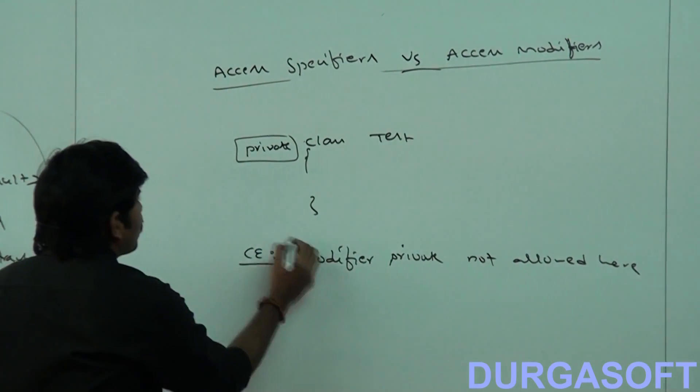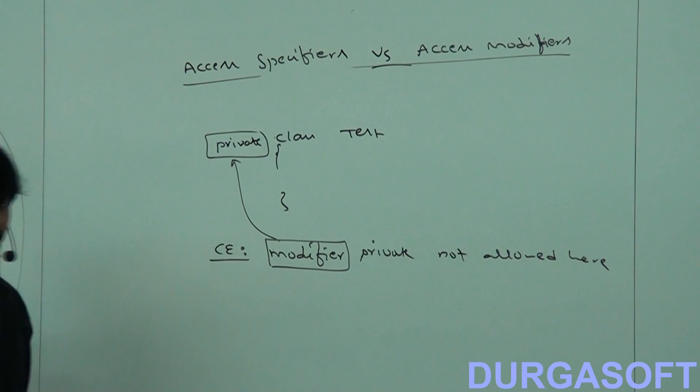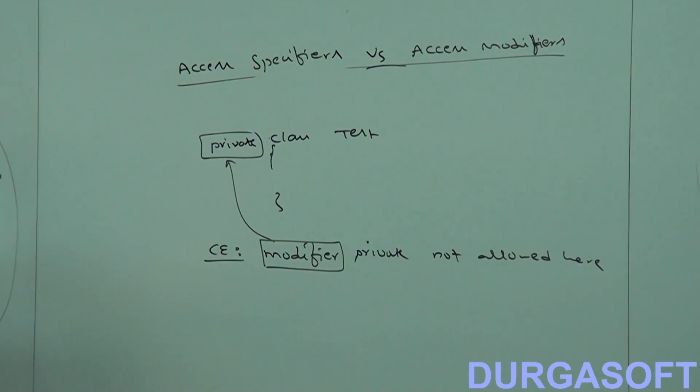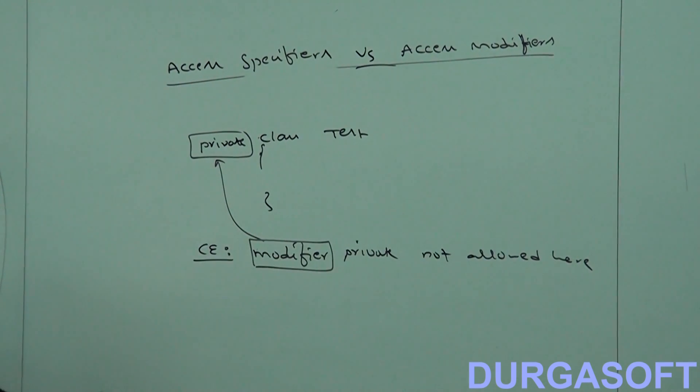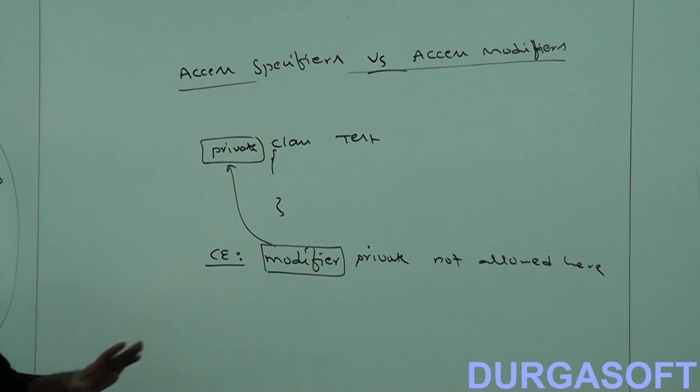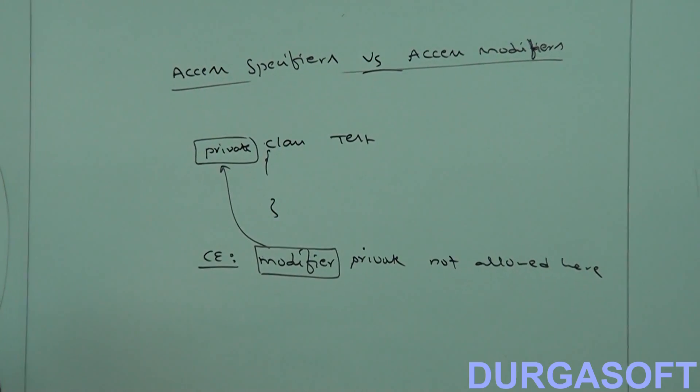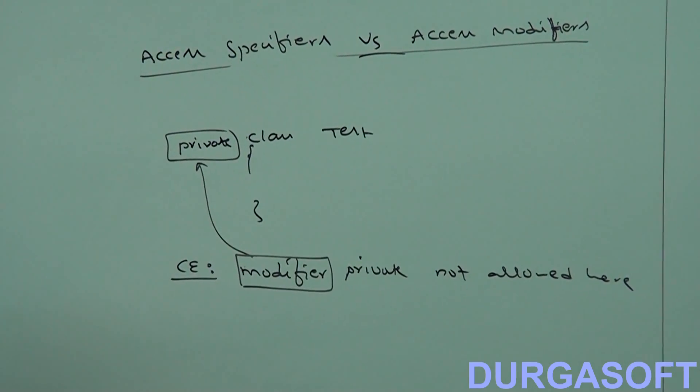Modifier private not allowed here. This is the compile time error by default we are going to get. Clear, compiler is also going to tell, yes, private is a modifier, not specifier. Specifier, such type of terminology not applicable for Java, it is applicable for old languages like C++ only. I hope it is clear with the practical proof. That's all.